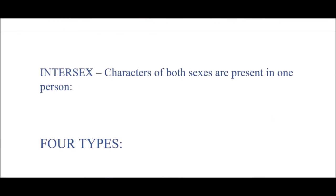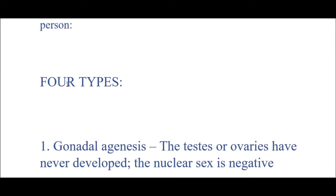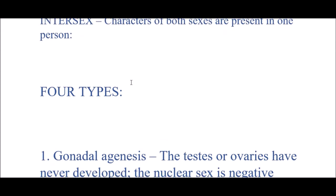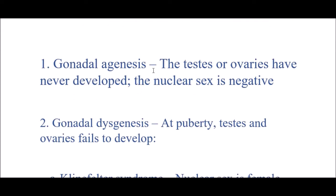What is intersex? Intersex involves having different characters of both sexes in one particular person — an intermingling of characters of both sexes. There are four types of intersex. First is gonadal agenesis, meaning the testis or ovaries have never developed, and the nuclear sex is negative.